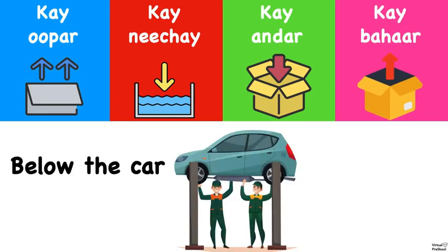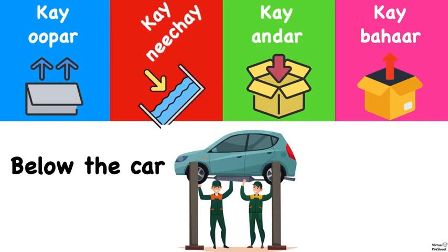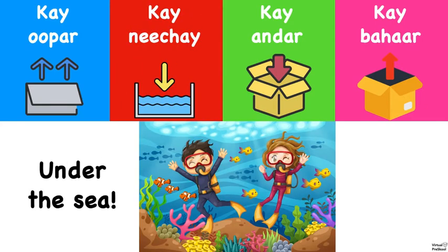Next one. They're standing below the car. Below - which one is below? Ke upar, ke neiche, ke under, or ke bahar? Ke neiche. Ke neiche is below. They're swimming under the sea. So which one would it be? Ke upar, ke neiche, ke under, or ke bahar? Ke neiche.